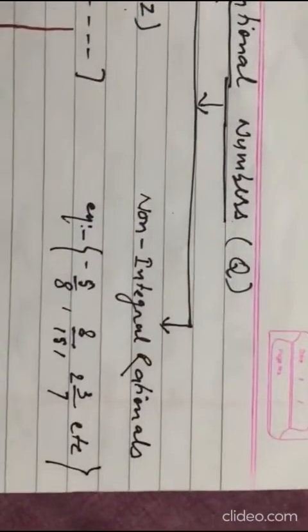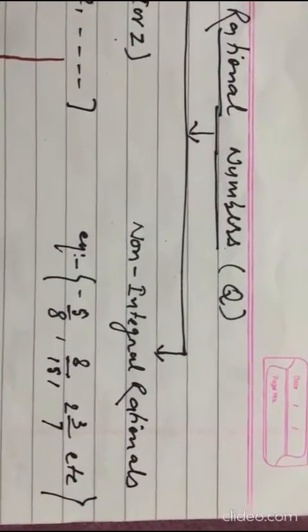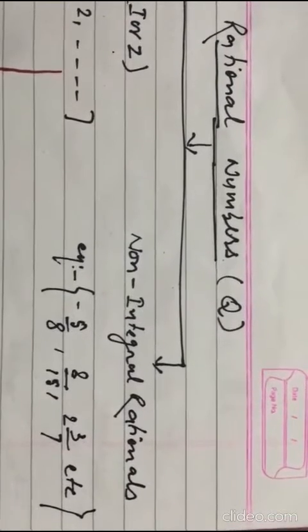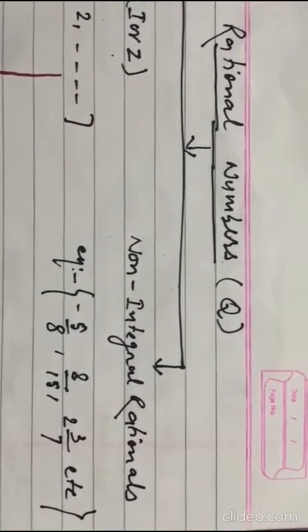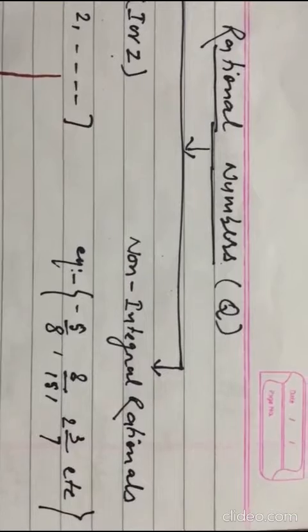And non-integral rationals, for example, minus 5 by 8, 8 by 15, 2 whole 3 by 7, etc.